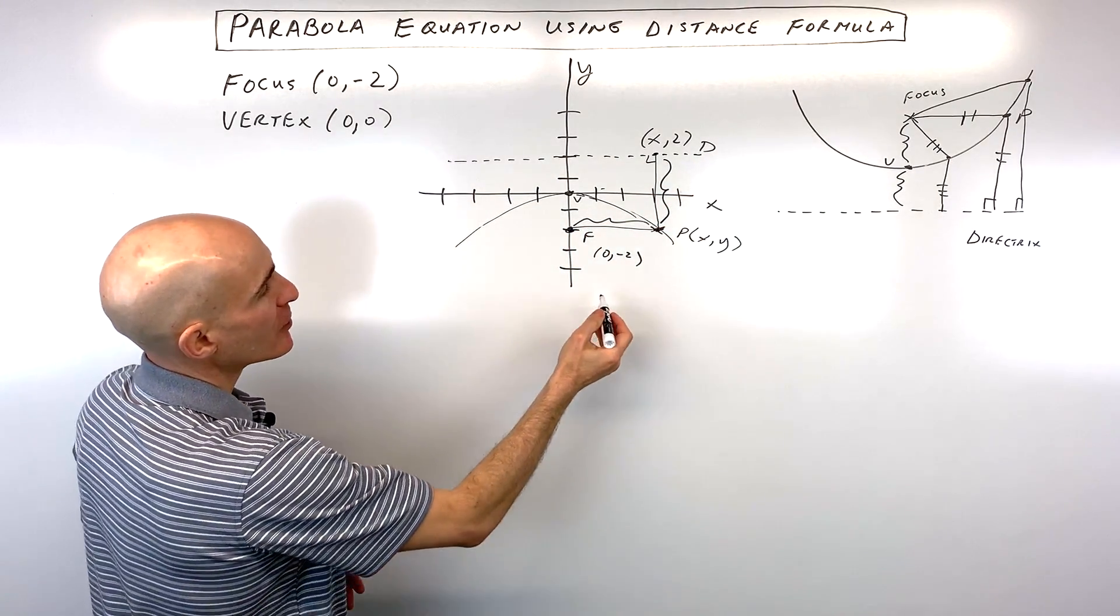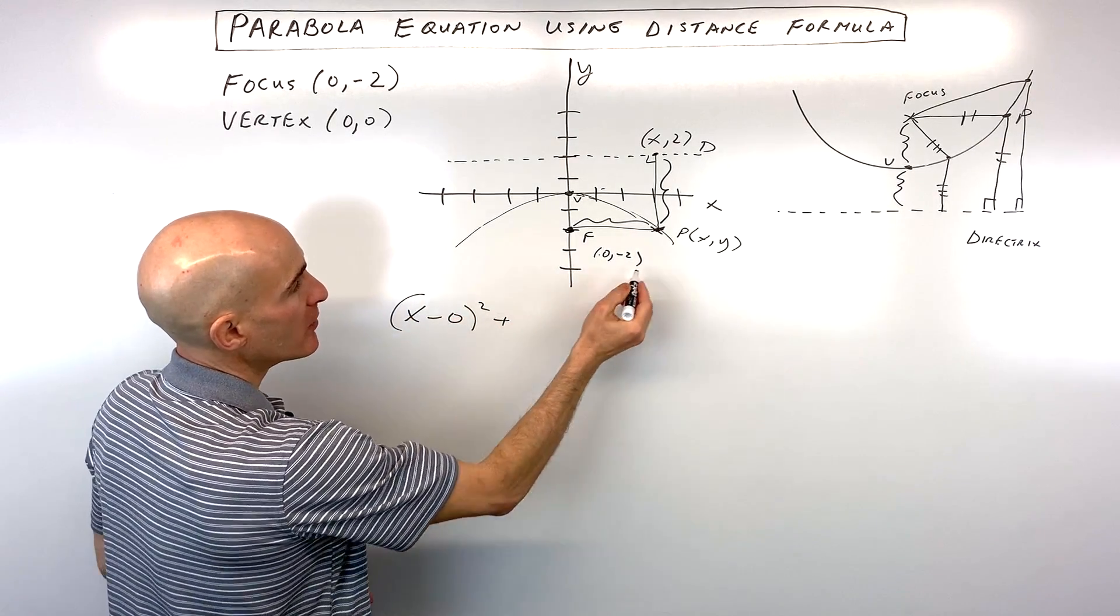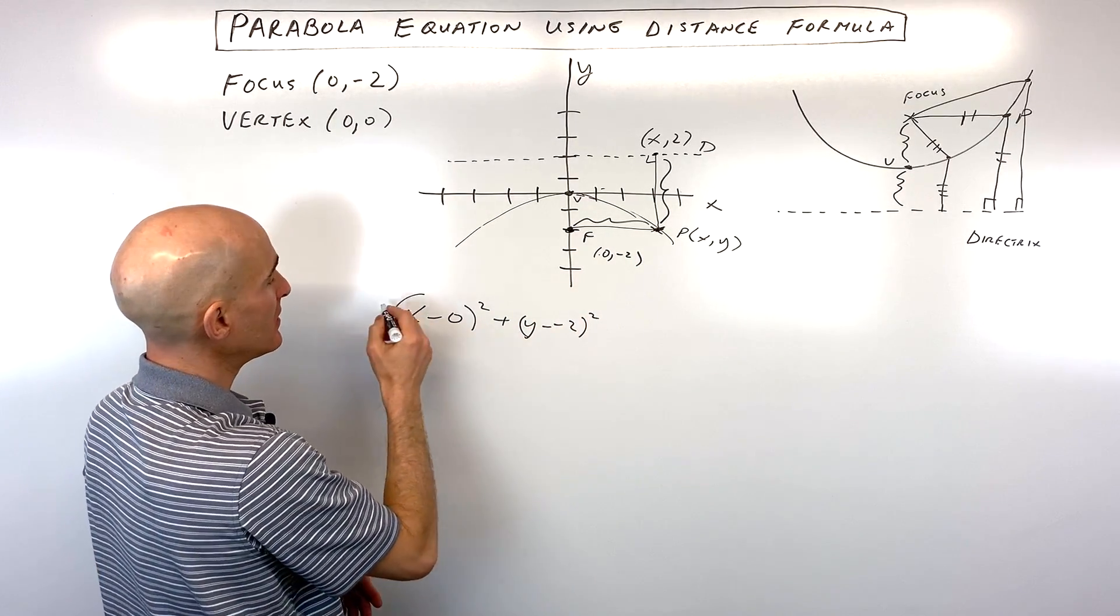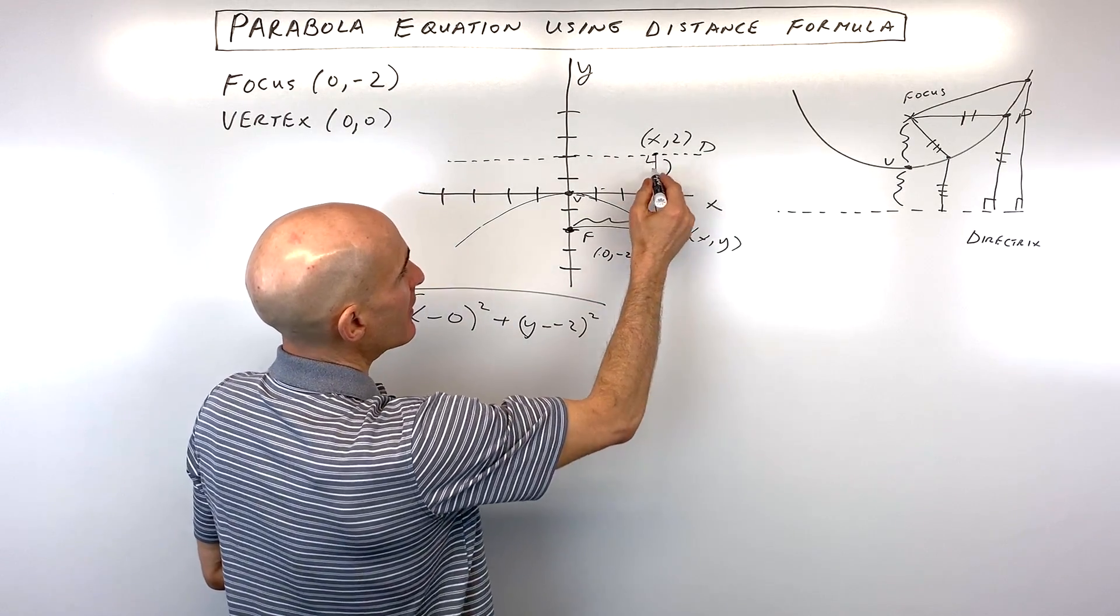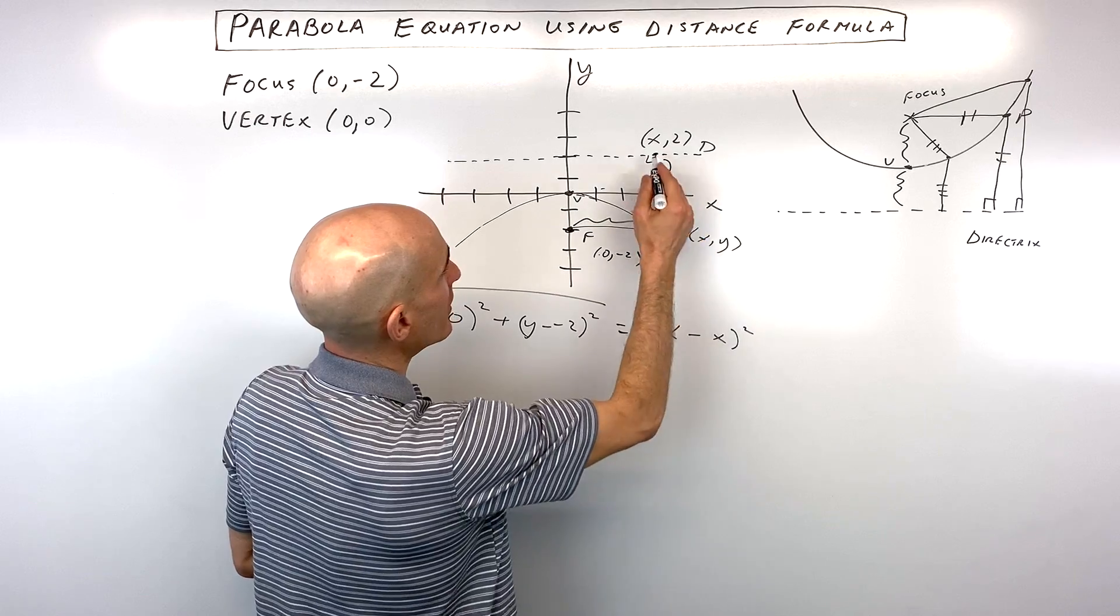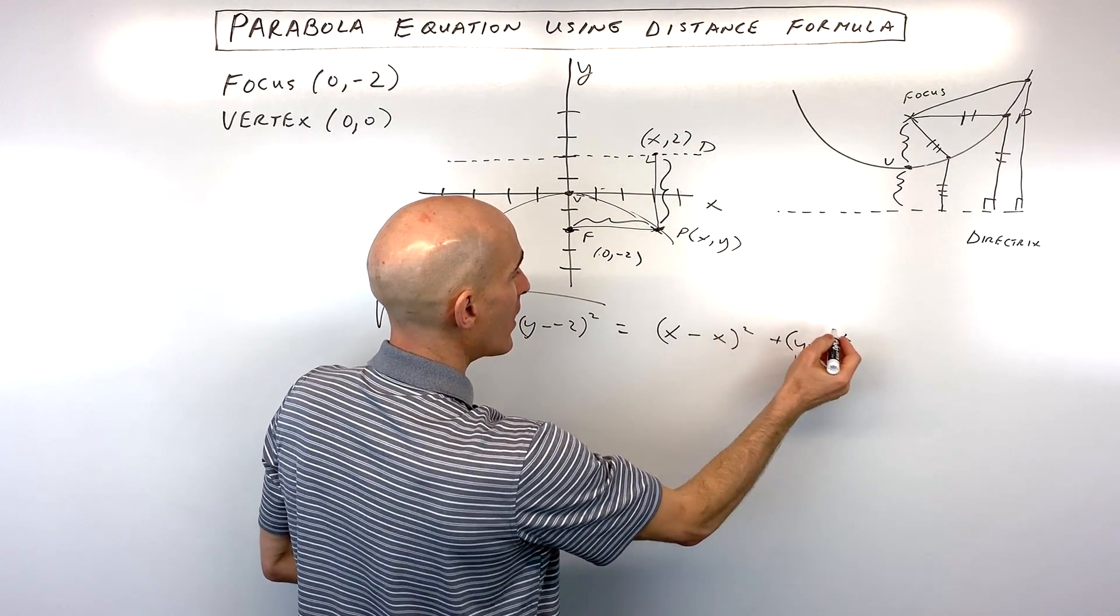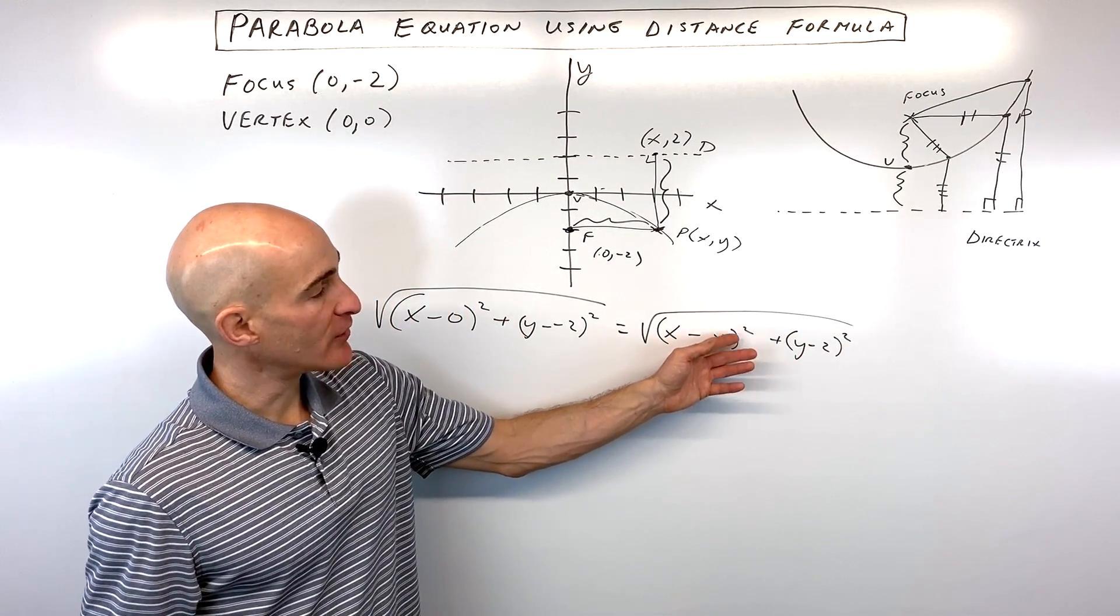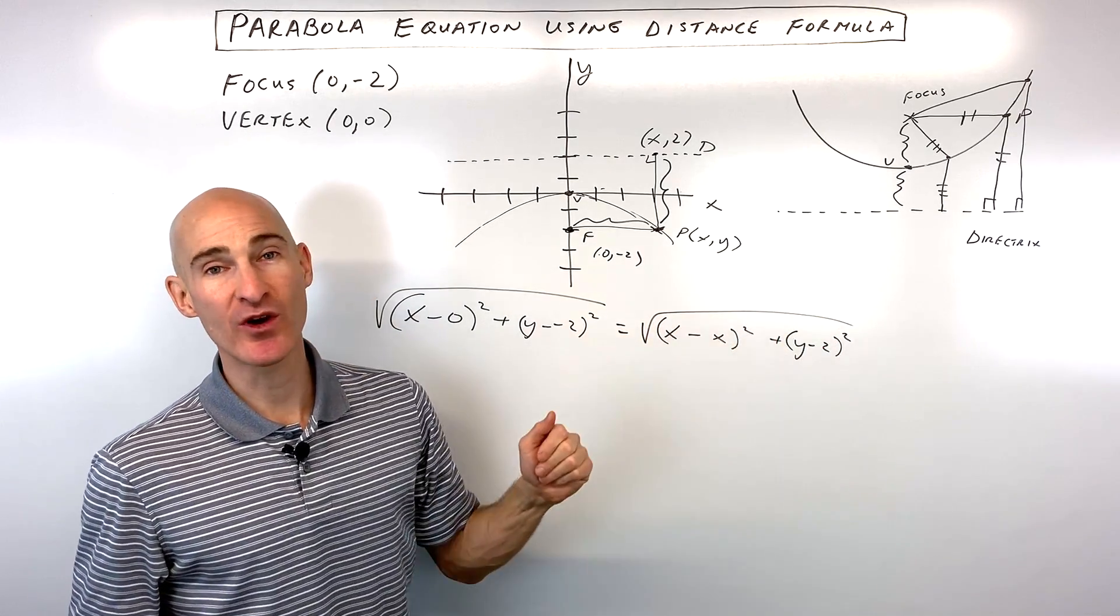So what we have here is (x - 0)² + (y - (-2))². Take the square root, so that distance is equal to this vertical distance here, which is (x - x)² + (y - 2)². And we take the square root. So that's just using our distance formula. (x₂ - x₁)² plus (y₂ - y₁)². Add those together and take the square root.